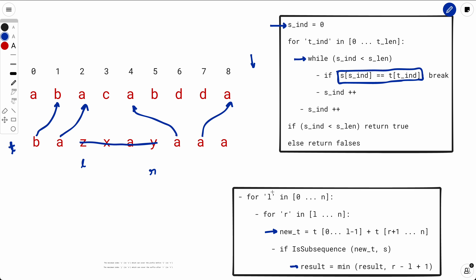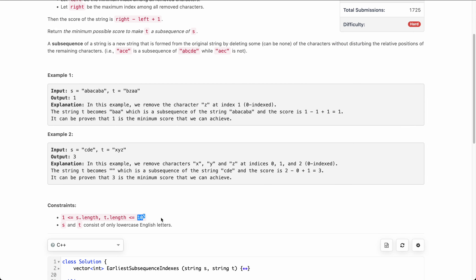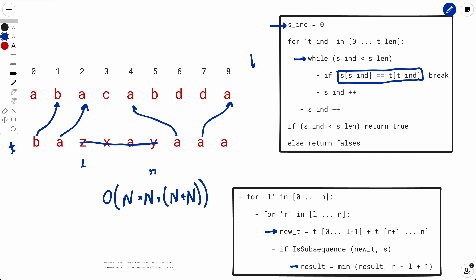What is the time complexity? We are doing two loops over n, and inside those loops we are calculating a new t which takes O(n) time, and calling is_subsequence which is also O(n). So the overall time complexity is O(n³). This will surely not pass because n is up to 2×10⁵ — even O(n²) will not pass. So we need to optimize this, but this is a valid solution.